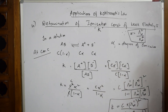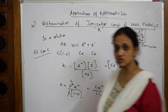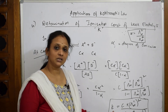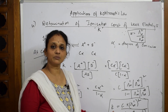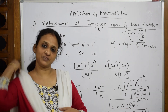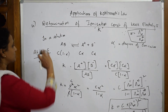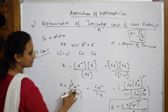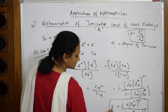To find the ionization constant, first find the molar conductivity at infinite dilution and the molar conductivity at a given concentration using Kohlrausch law. Once these values are obtained, substitute them into the formula K = cλ_mc² / [λ_m∞(λ_m∞ − λ_mc)] to calculate the ionization constant of the weak electrolyte.